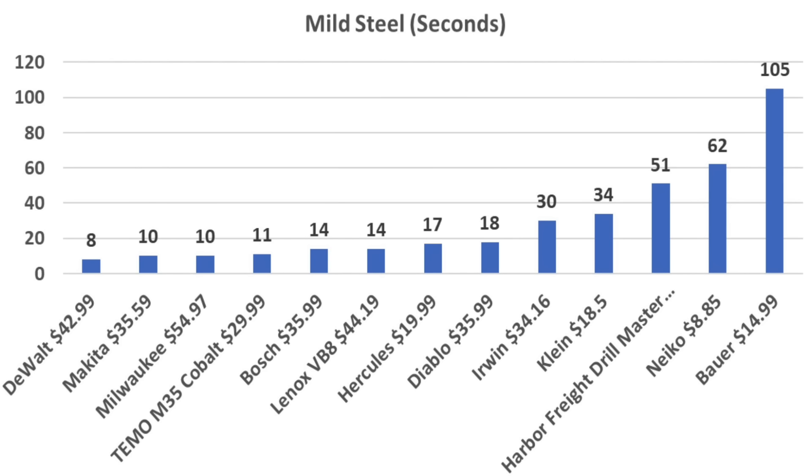DeWalt's spiral flute design and titanium coating yielded an eight second time, while Makita and Milwaukee tied for second with a blustering 10 second time. $30 Teemo proved to be a terrific performer at 11 seconds. The Swiss and US made straight double flute designs proved to be very capable at under 18 seconds. The $20 budget Hercules did a very respectable job at 17 seconds. Unfortunately, the single flute designed US brands and the under $20 budget brands really struggled taking two to three times longer in some instances, and the Bauer brand taking 10 times longer than the fastest brand.